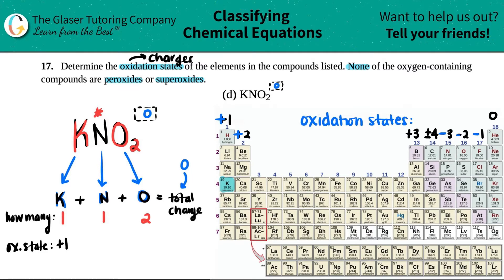Let's go to the other end of the spectrum: oxygen. They did say that none of the oxygen-containing compounds are peroxides or superoxides. So if that's the case, oxygen will always have a -2 charge.